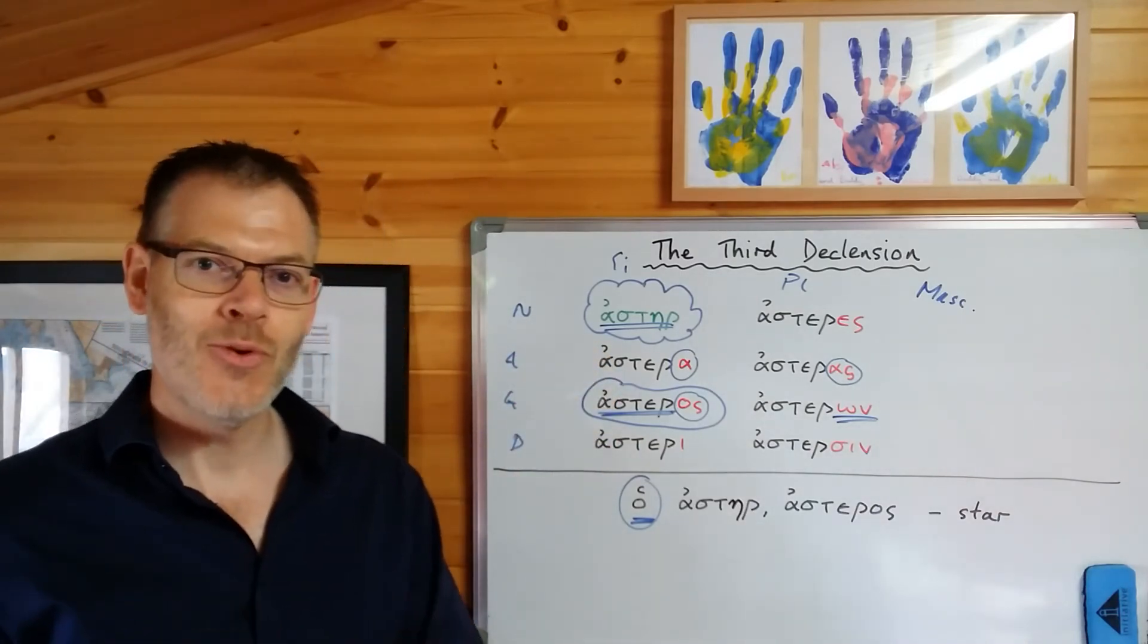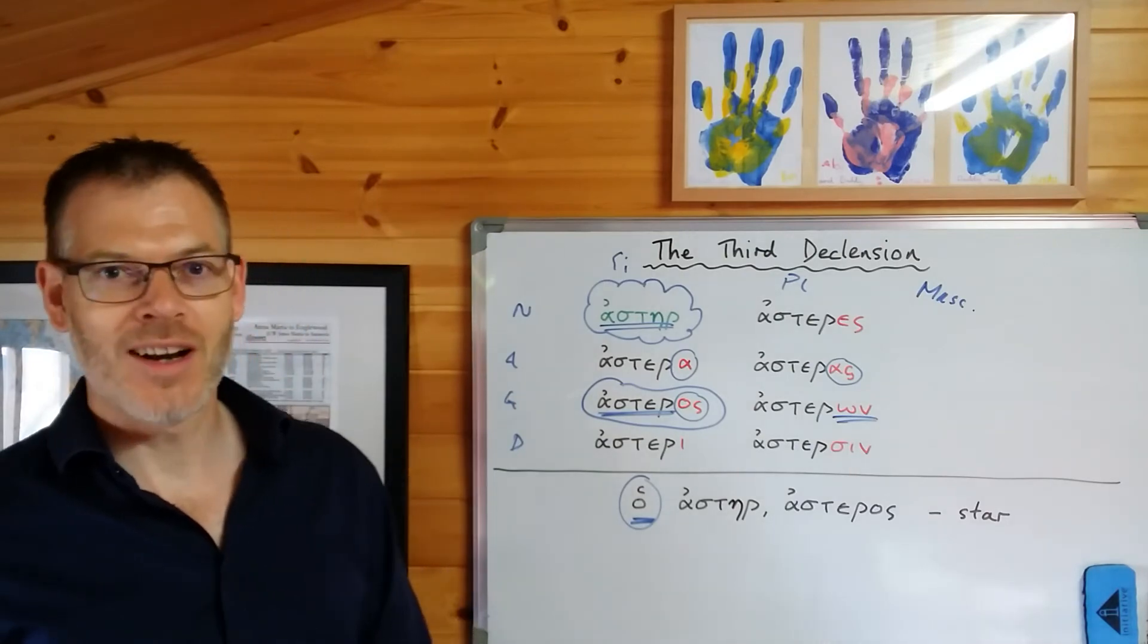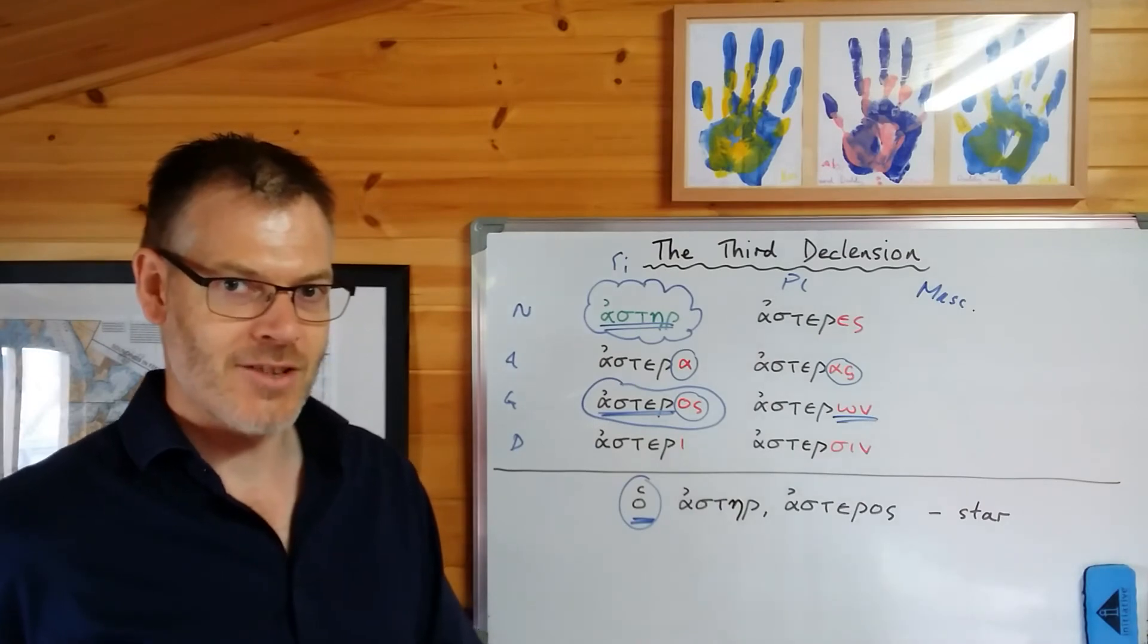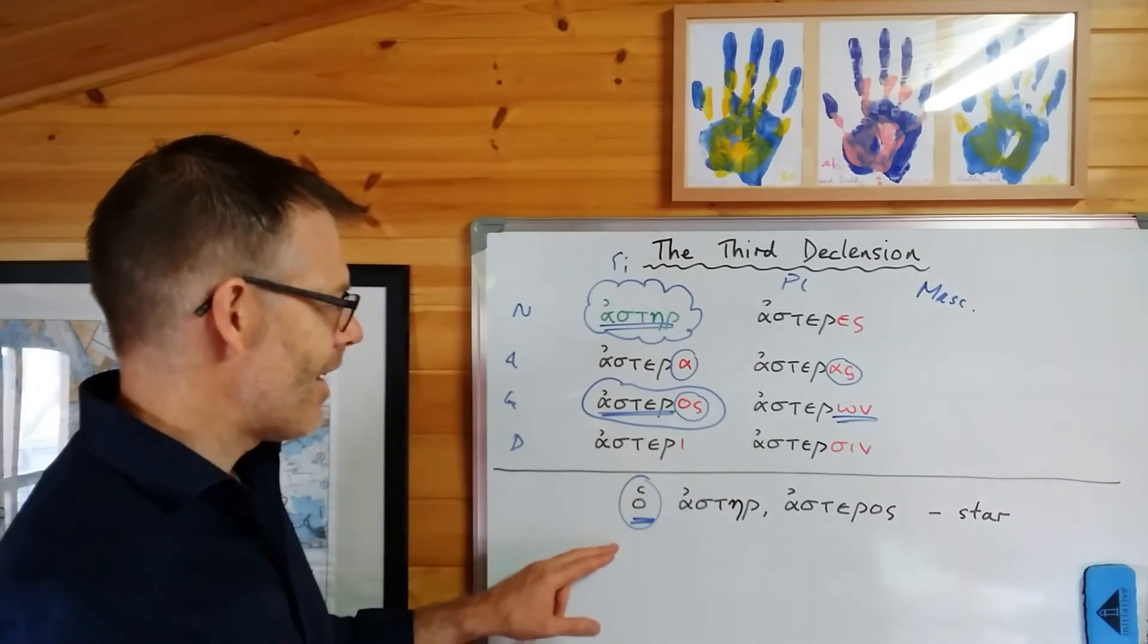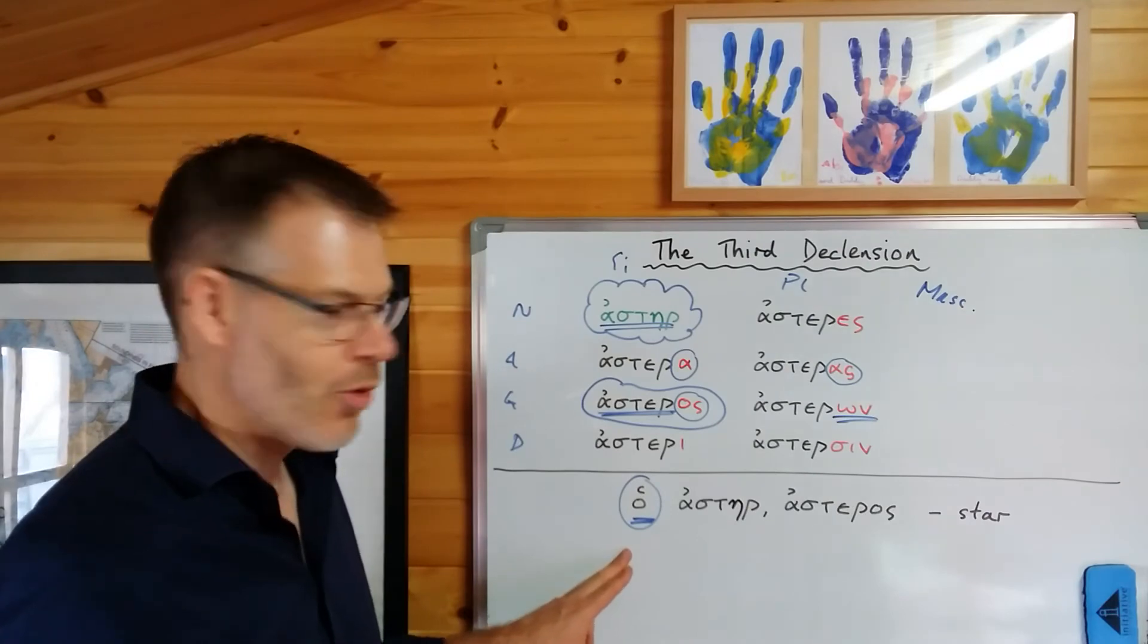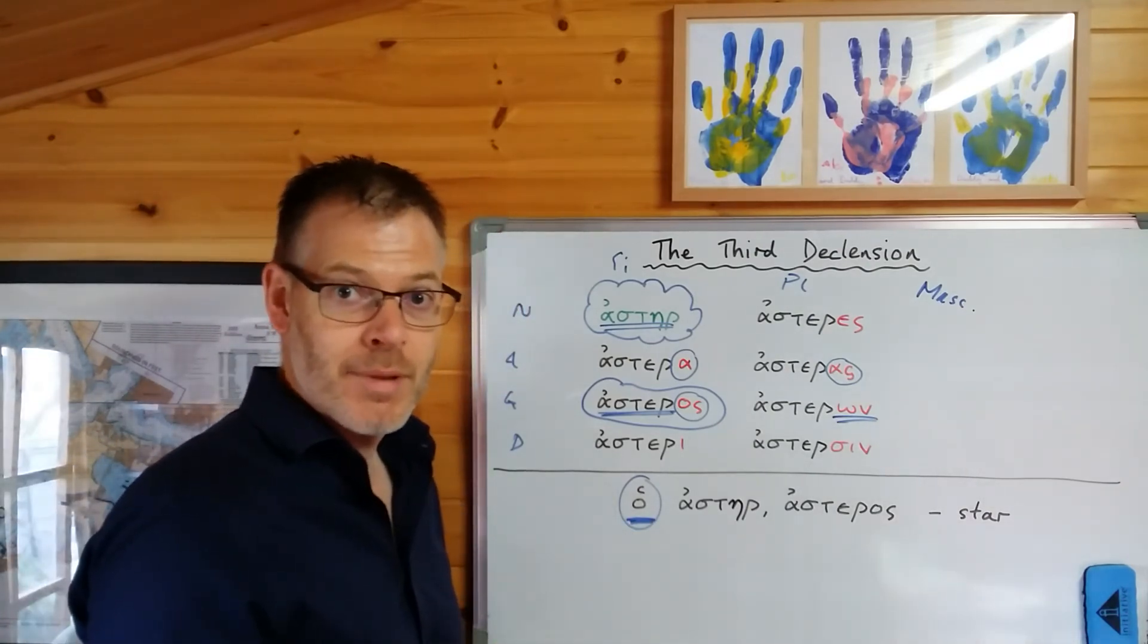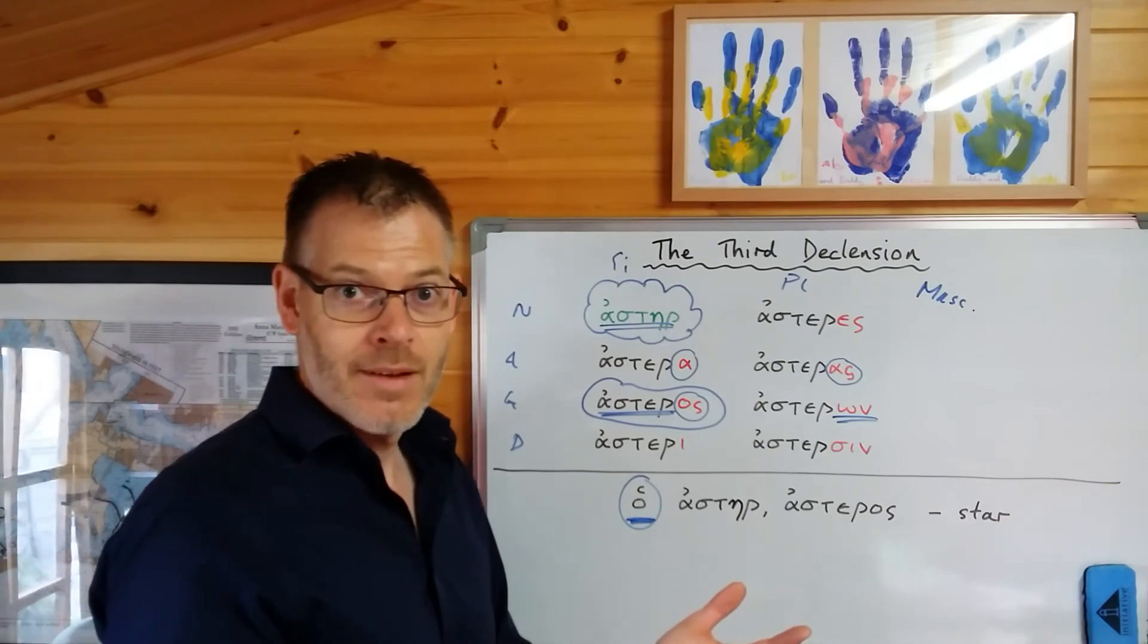So in fact, when you learn a third declension noun or when you see one listed in a lexicon, if you not just see the noun listed, you see three words listed like this, sometimes in a different order, but this is basically what you see.